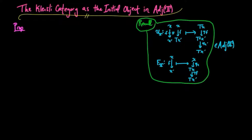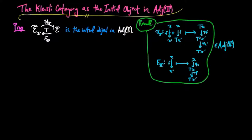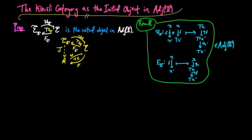We prove the adjoint situation for the Kleisli category is the initial object in the category of T-inducing adjoint situations. Precisely, if we are given a T-inducing adjoint situation F left adjoint to U from A to E, there is a unique functor J such that UJ equals the forgetful functor for the Kleisli category and J composed with F_T equals F.